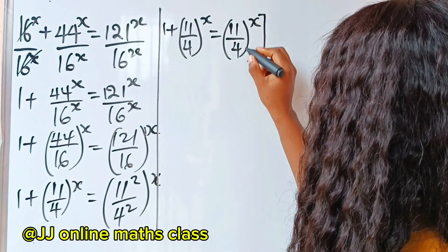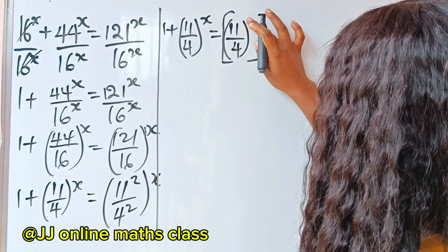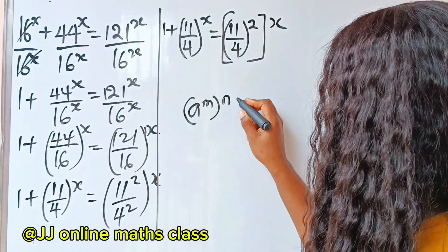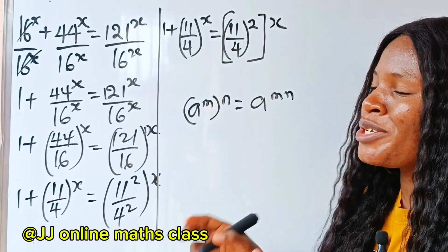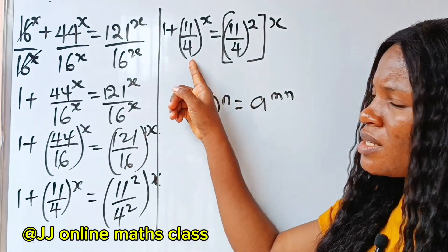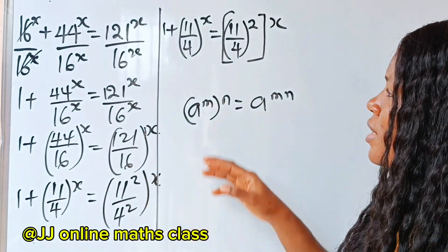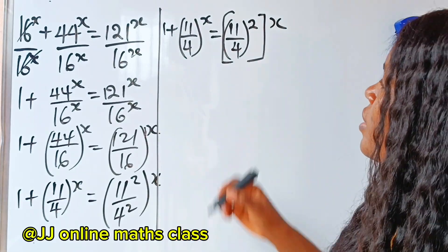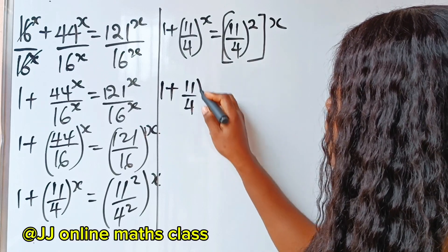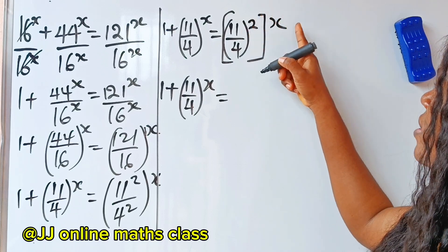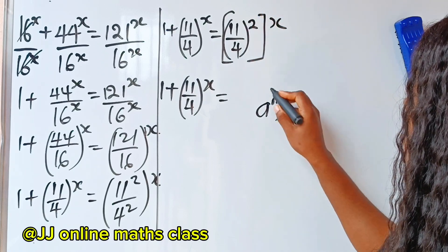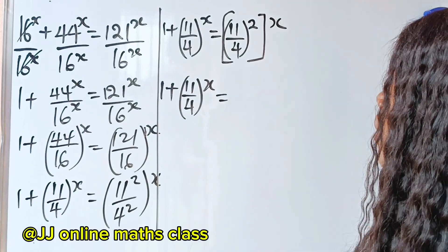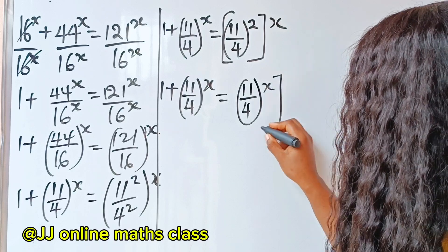So recall that a to the power of m, raised to the power of n, is equal to a to the power of mn. Also, a to the power of mn is the same thing as a to the power of n, raised to the power of m — the powers can be interchanged. So we are going to interchange this power right now, giving us 1 plus 11 divided by 4, raised to the power of x, is equal to 11 divided by 4, raised to the power of x, everything squared.